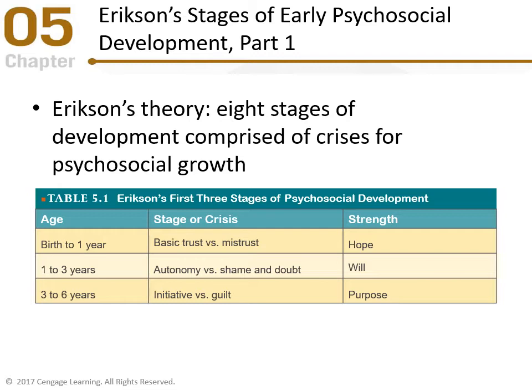The third stage is three to six years: initiative versus guilt, and that gives you purpose. It's about how much do I do versus how much should I not do, because it's not the right thing. A three-to-six-year-old is exploring a lot. This is really important when making social and emotional relationships — are you going to be rejected, say the wrong thing? But it gives you a purpose, a goal, and the initiative to achieve it.